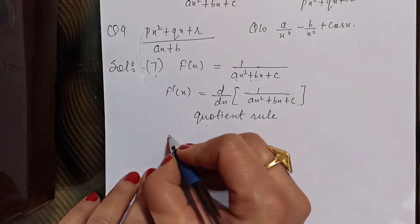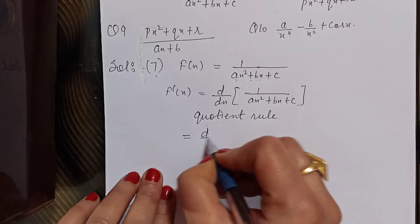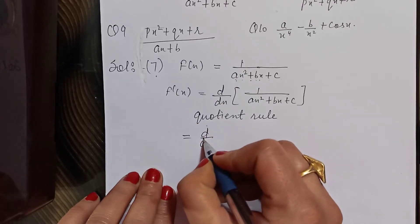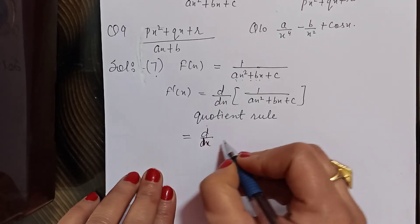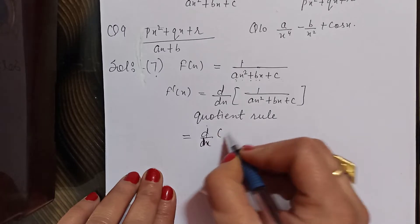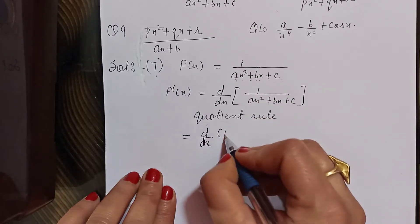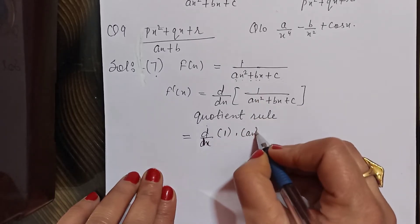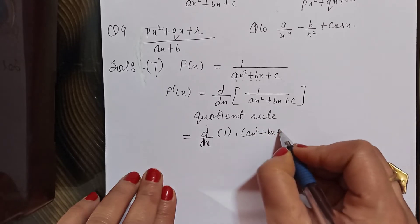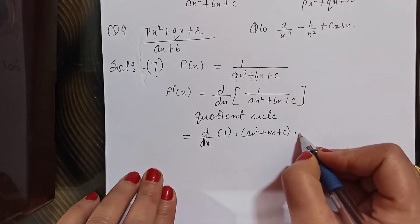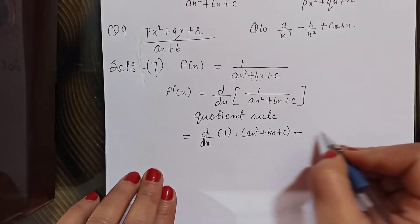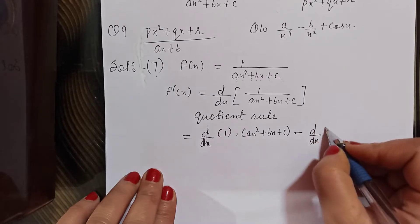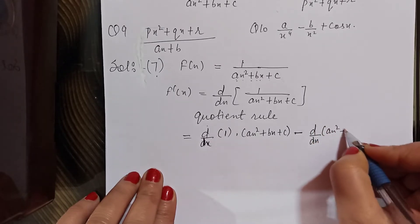So we take the derivative d/dx. We apply the quotient rule: derivative of the first function multiplied by the second function as it is, minus the derivative of the second function.